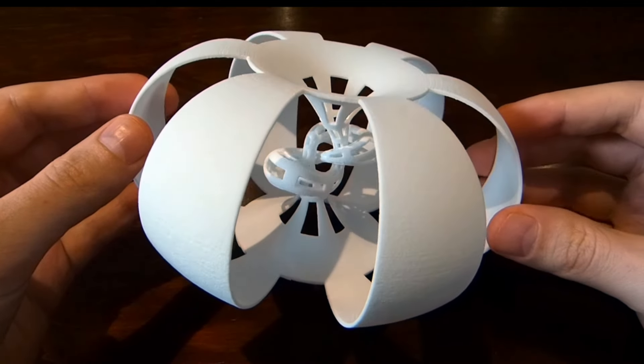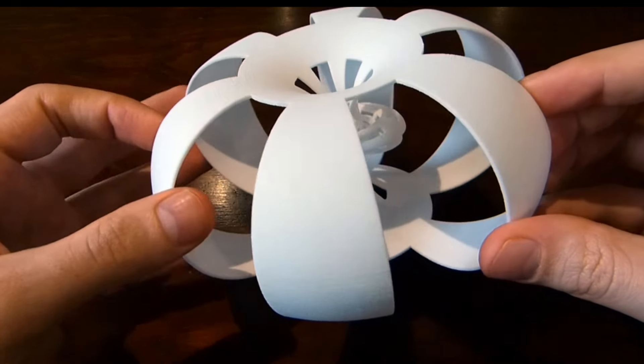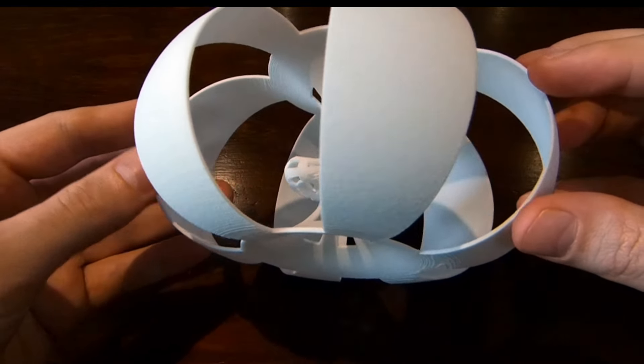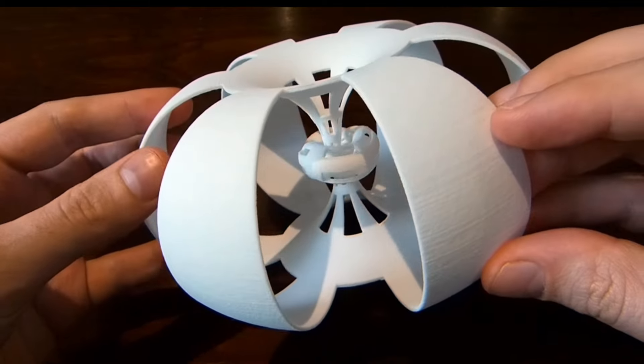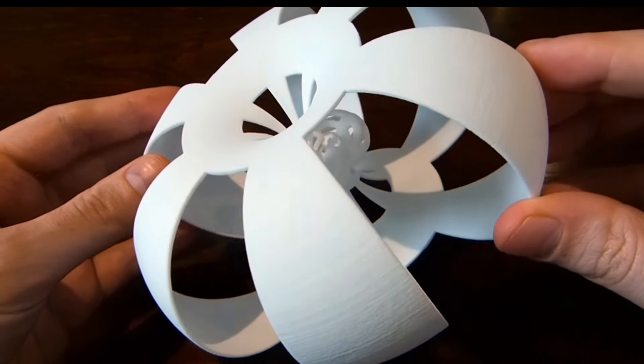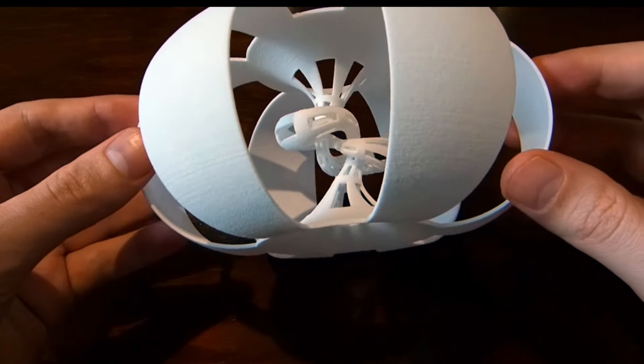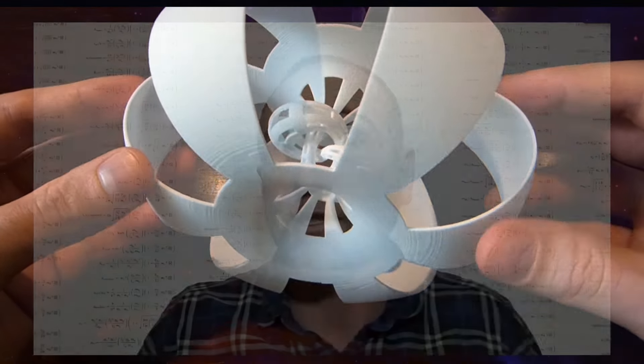So often in knot theory, it's a good idea to look not only at the knot, but also the complement of the knot. So the complement of the knot is what you get when you subtract the knot from three-dimensional space. And you're left with a three-dimensional manifold that has a torus boundary.